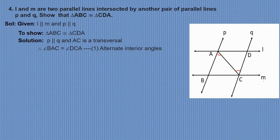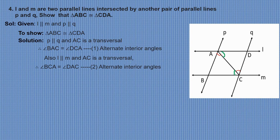Also, L is parallel to M and again AC is the transversal. Therefore, angle BCA is equal to angle DAC. We will take this as equation 2 — alternate interior angles.